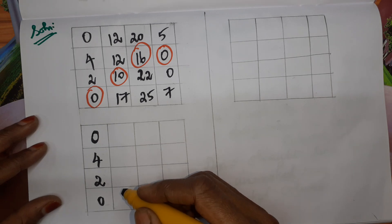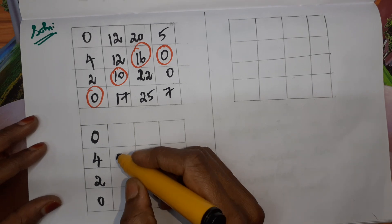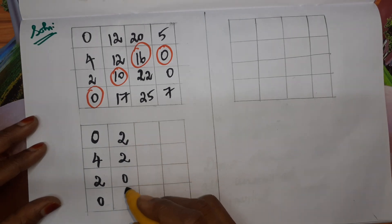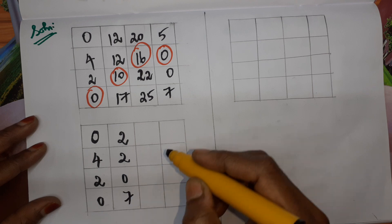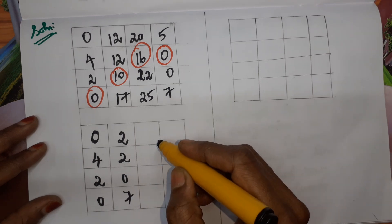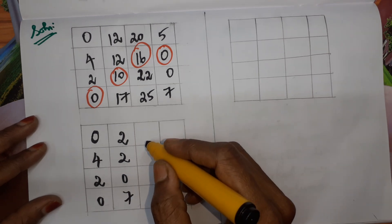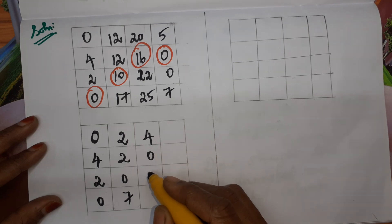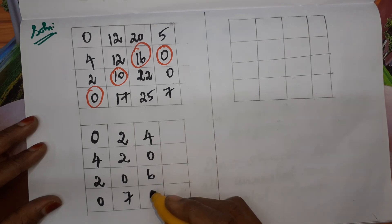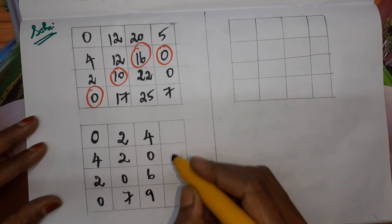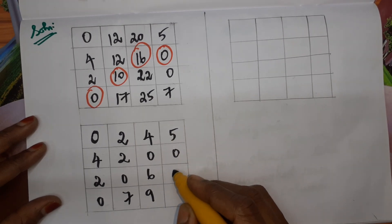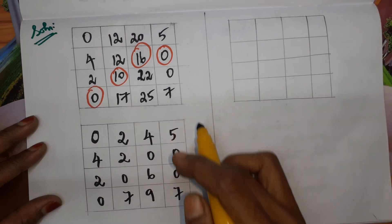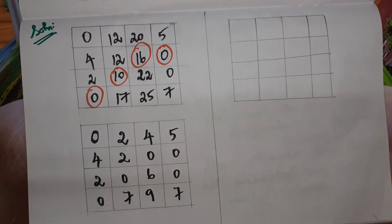In the next column, 10 is the least, so after subtraction: 2, 2, 0, 7. In the next column, 16 is the least, giving: 4, 0, 6, and 9. The last column has 0 as minimum, so no change in that column.